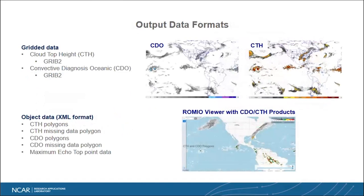For the outputs, we have two different versions. We have gridded outputs in GRIB2 format, as shown in the images here. We also have an XML format for the polygons — which is what we've been shown — that's used in the cockpit for displays and has lower bandwidth requirements.